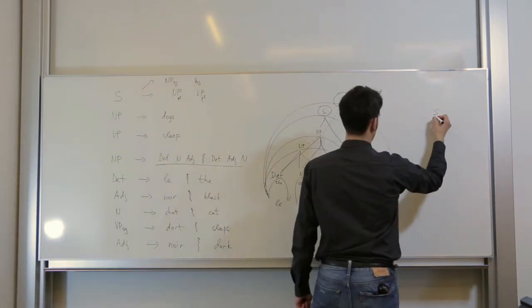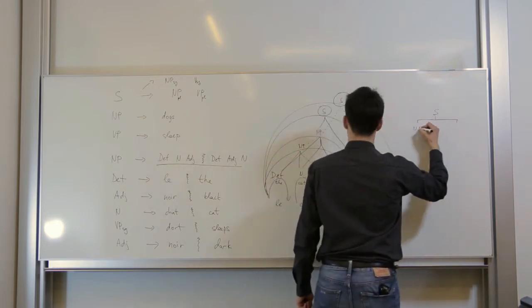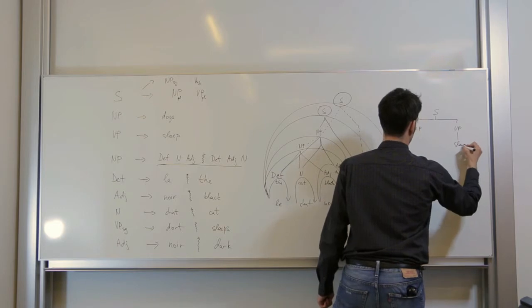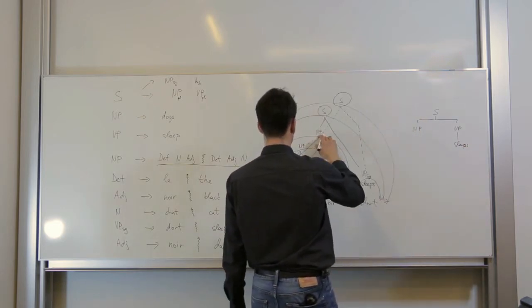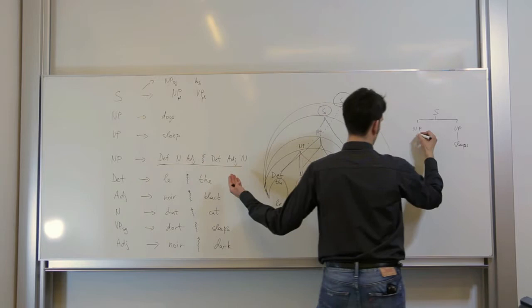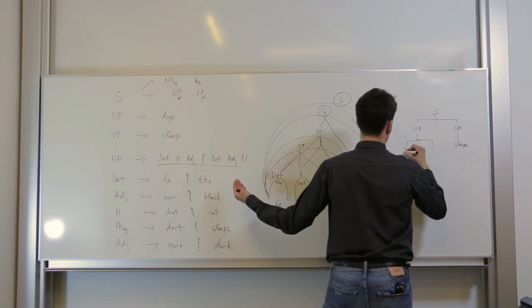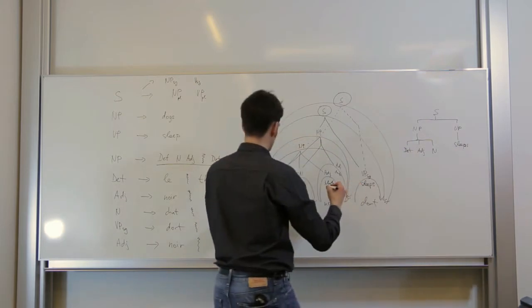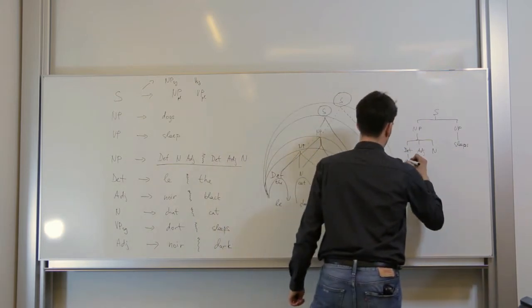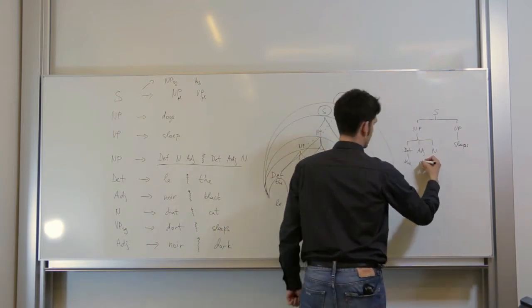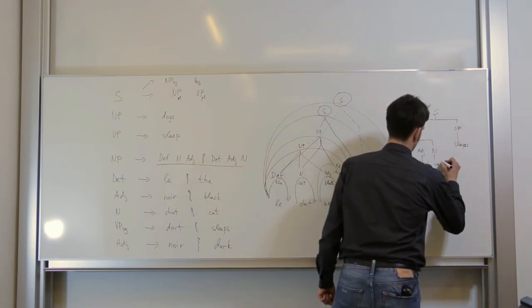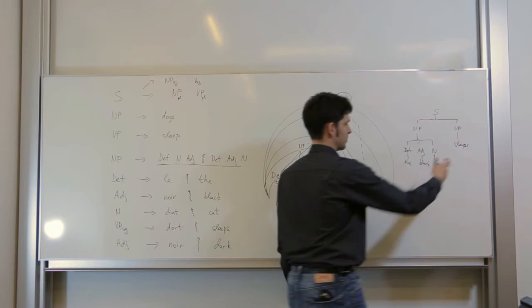So this S comes from an NP and a VP, and the VP is translated as sleeps, while the NP comes from a determiner noun and adjective, but in English these are reordered. Determiner, adjective, and a noun. And the determiner was translated as the, the adjective was translated as black, and the noun was translated as cat. The black cat sleeps.